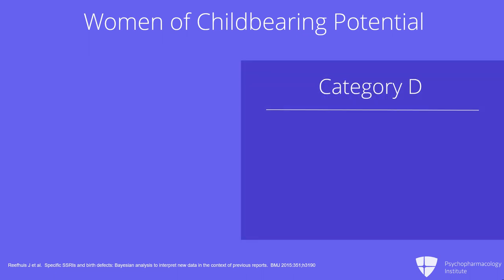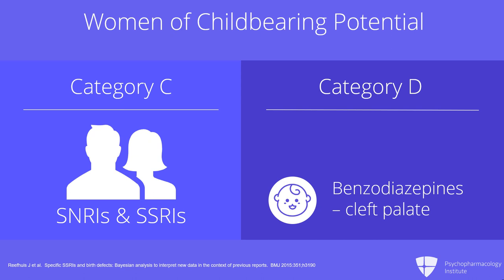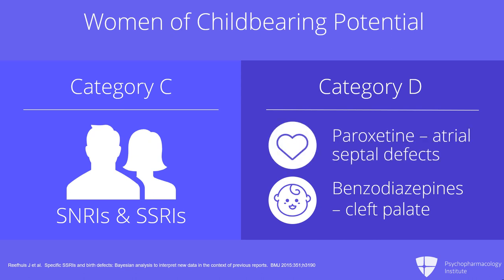Benzodiazepines are all category D for pregnancy due to risk of cleft palate, with the one exception being clonazepam. Category C means no known fetal abnormalities have been proven, though there have been isolated reports; category D means there has been consistent evidence of some problem — in this case, cleft palate. The SNRIs and SSRIs are all category C, except paroxetine, which is category D, and atrial septal defects are the concern with paroxetine.